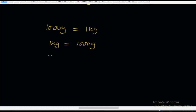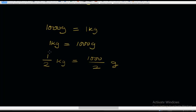The next thing we're going to do is introduce fractions. We're going to fractionalize this. For example, I'm going to divide both sides of the equation by 2. So, 1/2 kg is equal to 1,000 over 2 grams. 1/2 kg means half of a kilogram. Working this out: half kg, that is 1/2 kg, is equal to 1,000 divided by 2, which is 500 grams. So, half a kilogram is equal to 500 grams.